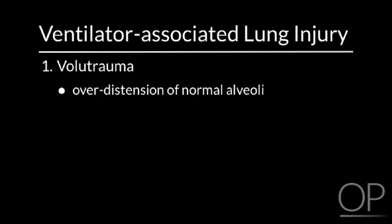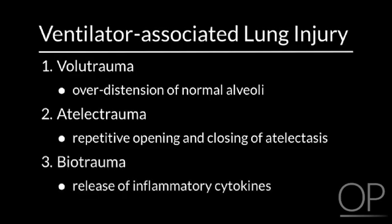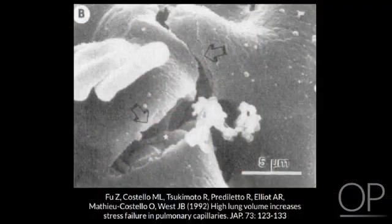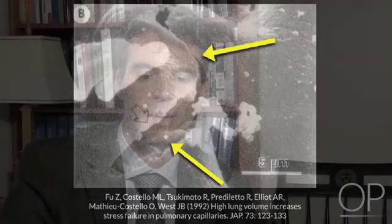Let's talk about ventilator-associated lung injury. Whenever we use a ventilator, we recognize it's life-saving, but the ventilator can also induce ventilator-associated lung injury and make the patient worse. This can happen in three ways: volutrauma, which is overdistension of normal lung units or alveoli; atelectrauma, which is the repetitive opening and closing of atelectasis; and biotrauma, which is the release of inflammatory cytokines that fuel the lung injury. An electron microscope image of an animal lung shows fine tears in the alveoli, through which protein-containing fluid leaks into the alveolus and fuels the inflammatory cascade.